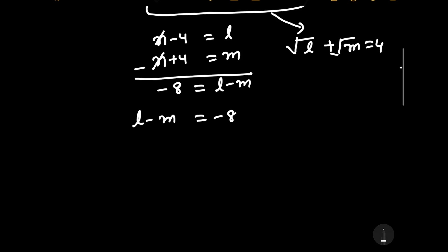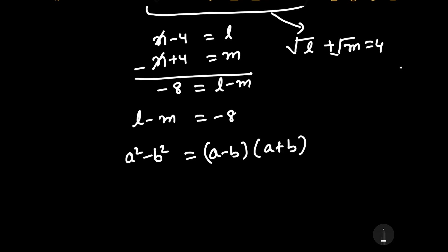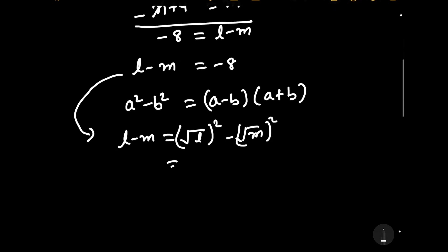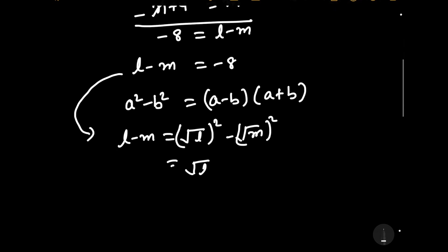We know that a squared minus b squared is equal to (a minus b)(a plus b). Using this identity, l minus m can be written as (square root of l) squared minus (square root of m) squared, which equals (square root of l minus square root of m) times (square root of l plus square root of m).